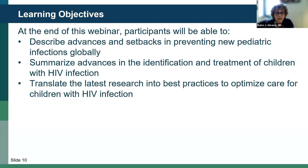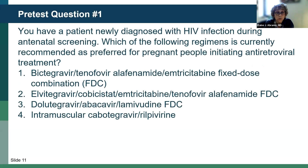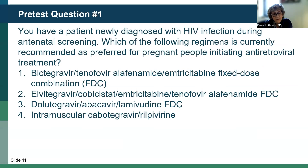We'll now turn to our first pre-test question. You have a patient newly diagnosed with HIV infection during antenatal screening. Which of the following regimens is currently recommended as preferred for pregnant people initiating antiretroviral treatment? The options are: tenofovir alafenamide/emtricitabine FDC; elvitegravir/cobicistat/emtricitabine/tenofovir alafenamide FDC; dolutegravir/abacavir/lamivudine FDC; or intramuscular cabotegravir/rilpivirine. We'll give you a minute to complete.